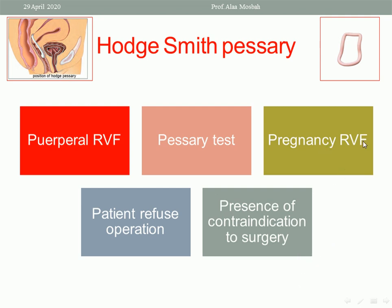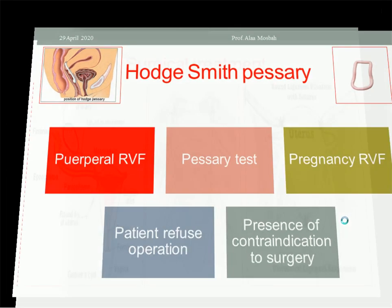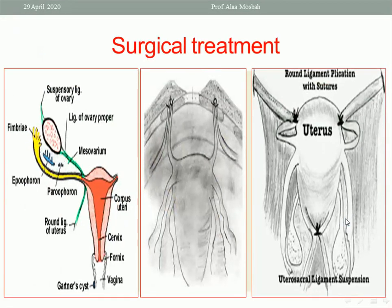The Hodge pessary is used as shown in the picture. The indications include puerperal RVF discovered after six weeks from delivery, and as a pessary test to confirm that symptoms are relieved after insertion — indicating they are related to RVF rather than another cause. The pessary is used during the first trimester up to 14 weeks, until the uterus becomes an abdominal organ, and then removed. If the patient is symptomatic but refuses surgery, or has contraindications to surgery, the pessary can be used as a replacement for surgical treatment.